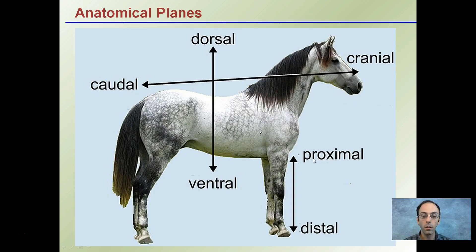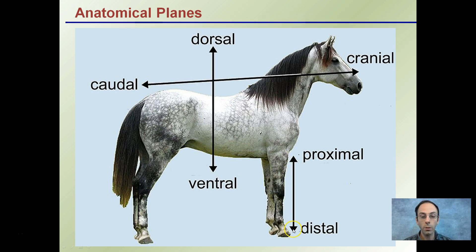Starting with general anatomical planes and anatomical orientation, we have the dorsal side of the horse, which is the back; the ventral, which is typically the stomach region; distal — the hooves are distal — and proximal would be closer to the midsection. Cranial is towards the head, caudal is towards the back. When we say something is distal, it's further away from the midpoint; proximal would be closer to that particular midpoint.